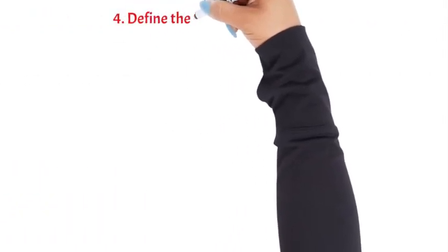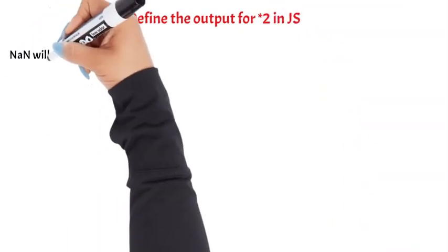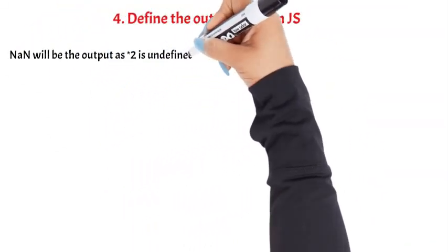Question 4: Define the output for asterisk 2 in JS. NaN will be the output as asterisk 2 is undefined.